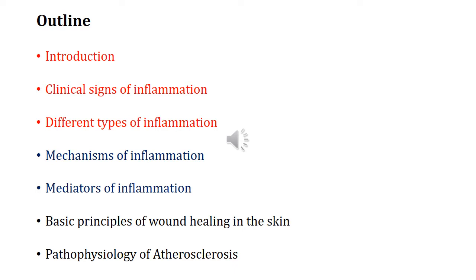In the first part we will learn what is inflammation, what is exactly the definition of inflammation, what are the clinical signs of inflammation, and the different types of inflammation. In the second part we will learn the different mechanisms of inflammation. In the third part we will learn about the mediators of inflammation, and in the final part we will learn about basic principles of wound healing in the skin and the pathophysiology of atherosclerosis.